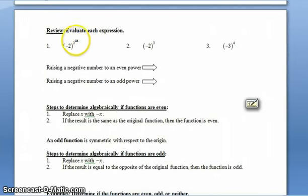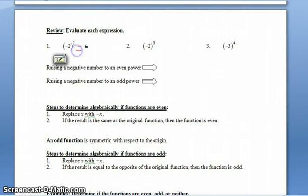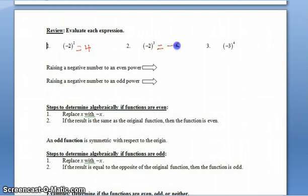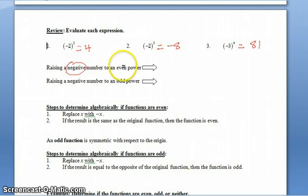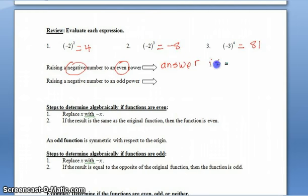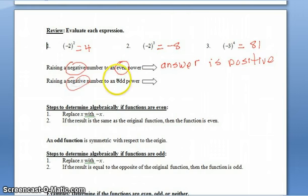We evaluated these expressions. If you raise negative two to the second power — negative two times negative two — that equals positive four. If you raise negative two to the third power — negative two times negative two times negative two — you get negative eight. If you raise negative three to the fourth power, you get positive 81. Our takeaway: if you raise a negative number to an even power, your answer is positive. If you raise a negative number to an odd power, your answer is negative.